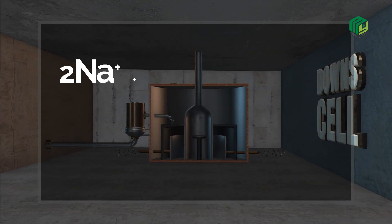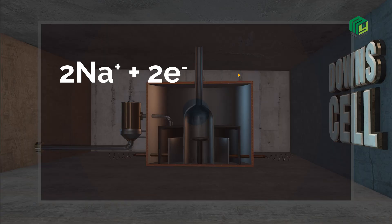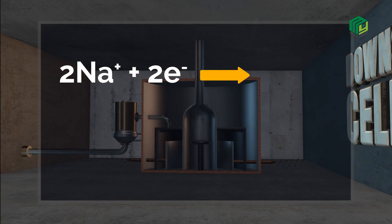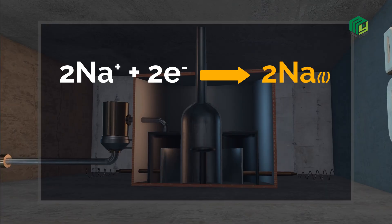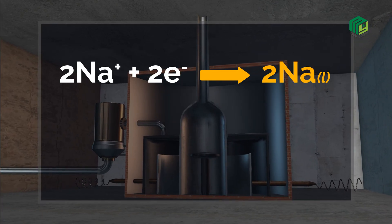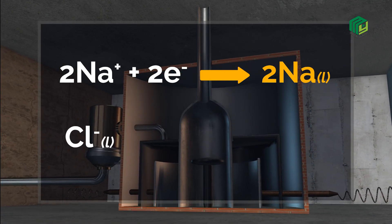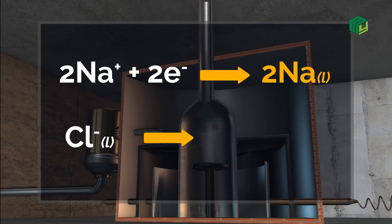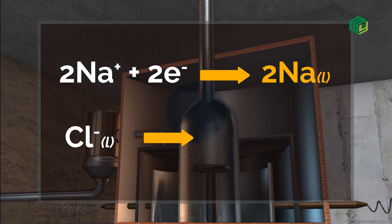The reaction at the cathode is: sodium ions reduce at the cathode and form sodium metal. The reaction at the anode is: chlorine ions are oxidized to give chlorine gas.